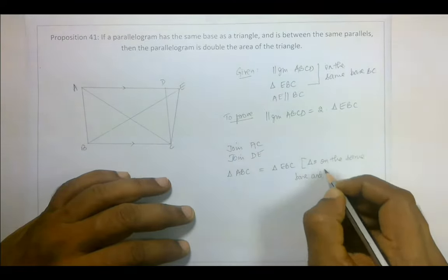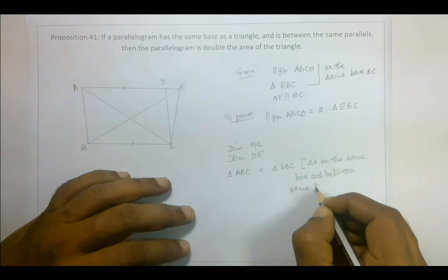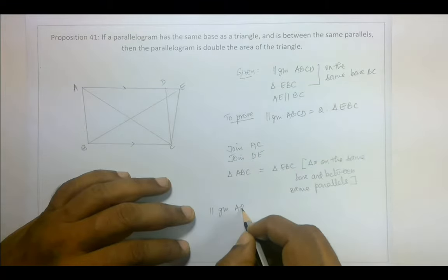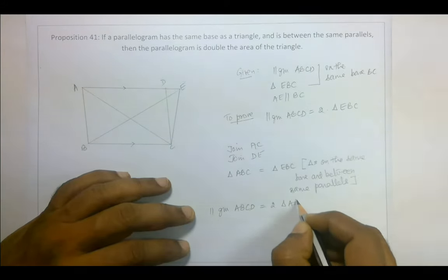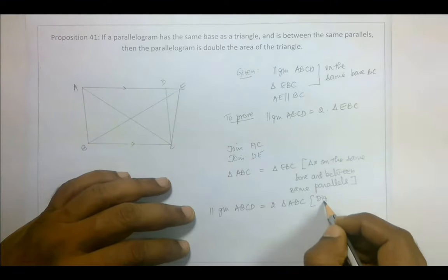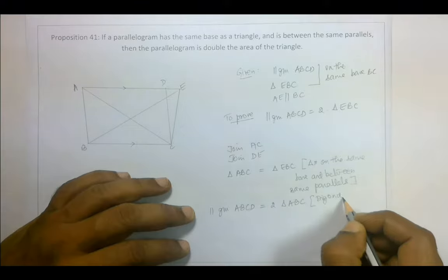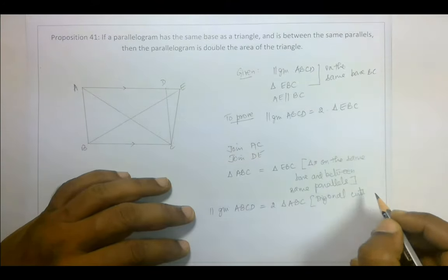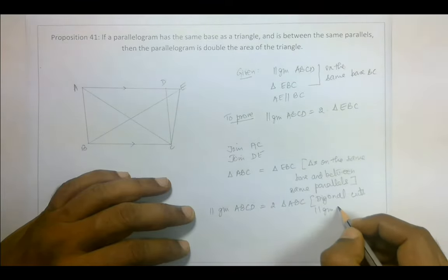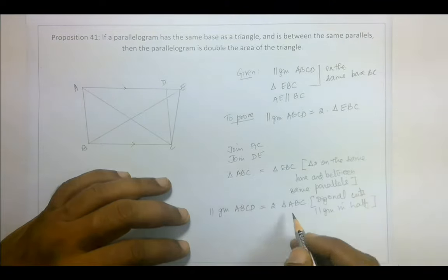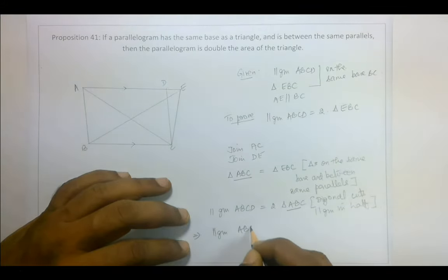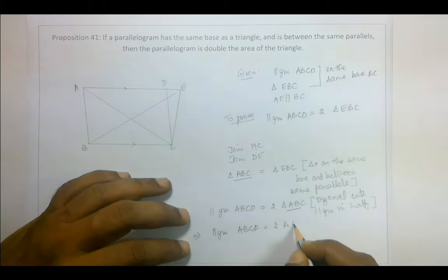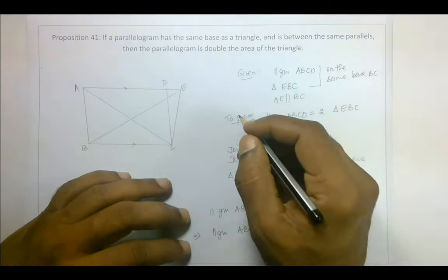For parallelogram ABCD is equal to two times triangle ABC. The diagonal cuts the parallelogram in half. So triangle ABC, which implies that parallelogram ABCD is equal to two times triangle ABC is equal to two times triangle EBC.